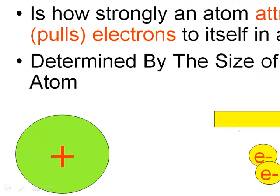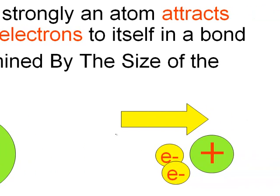Let's sum it up. Electronegativity is how strongly an atom attracts or pulls electrons to itself in a bond — it's a tug-of-war. The winner of the tug-of-war is determined by the size of the atom: smaller atoms are more electronegative, larger atoms are less electronegative. So the smaller atom will always pull electrons closer to itself in a chemical bond. That's all, guys — thanks for tuning in.